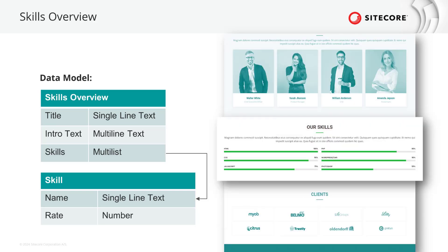On the same page there is a skills overview — again a similar pattern. We have a parent component with a data source that starts with a title as single line text, an intro text as multi-line text, and skills as a multi-list field that references skill items containing a name field as single line text and a rate field as number.